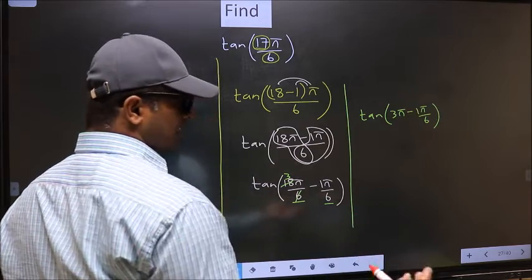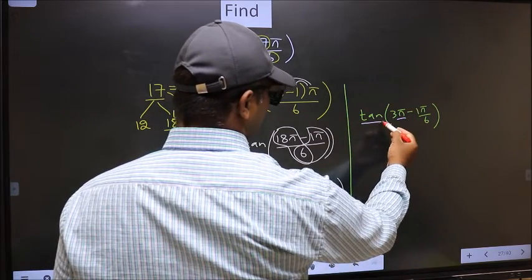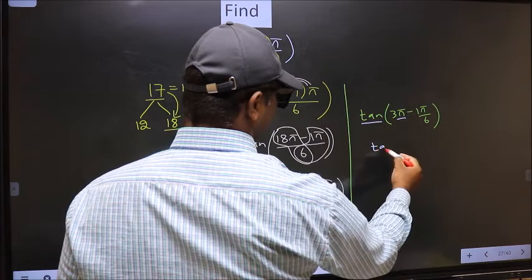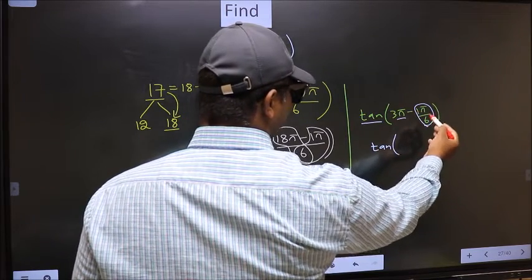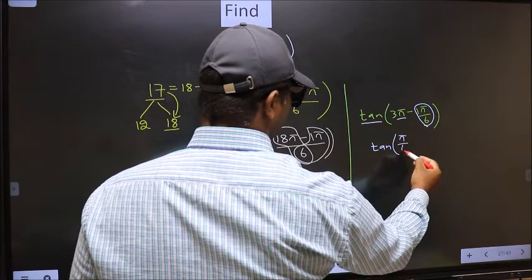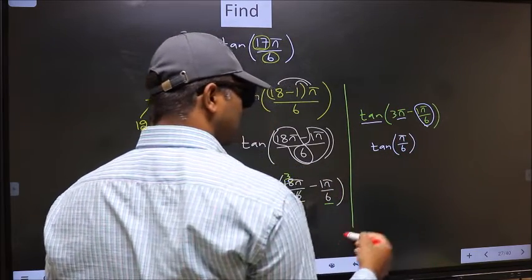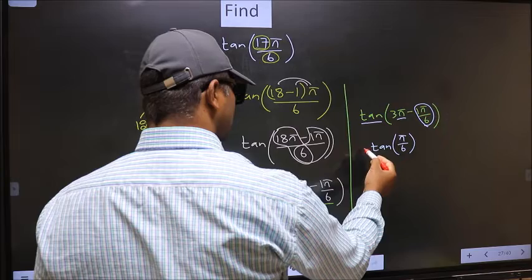Next, here we have π, so tan is not going to change. It will remain tan. And inside we get this angle, π by 6. Now the question is, will we get here plus or minus?